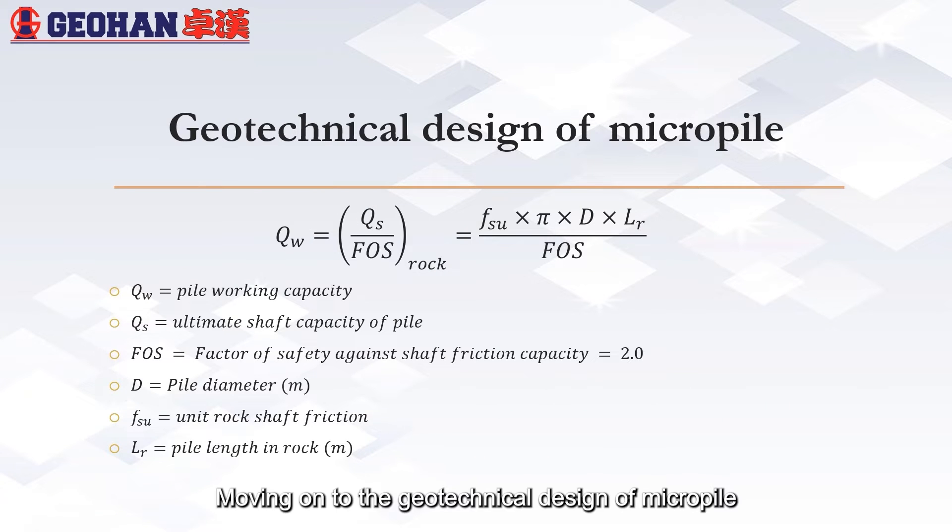Moving on to the geotechnical design of MicroPile. This is to ensure the adopted rock socket length is sufficient and safe to withstand the loading transfer from MicroPile. The pile working capacity is equal to the product of unit rock shaft friction, pile diameter and length of rock socket divided by factor of safety against shaft friction. Minimum global safety factor adopted is equal to 2.0.